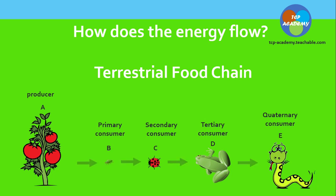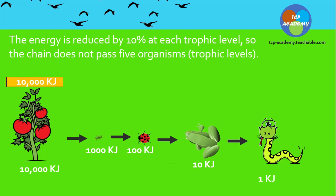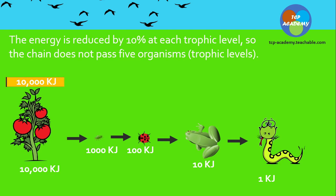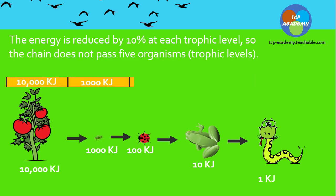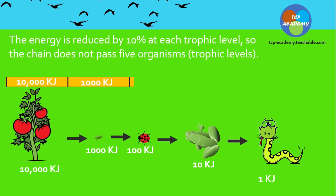The truth is the quaternary consumer is not always there. The energy is reduced by approximately 10% at each trophic level. So the food chain does not usually pass five organisms, which represents five trophic levels. As we move along, looking at the energy — if we start with 10,000 kilojoules, then 1,000 kilojoules, then 100 kilojoules, then 10 kilojoules, down to one — what you're observing is that as we move from producer to consumer, the amount of energy available dwindles significantly.